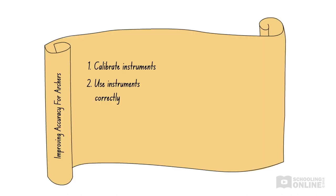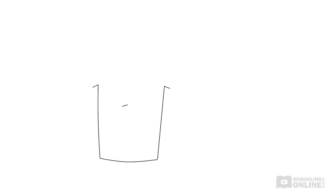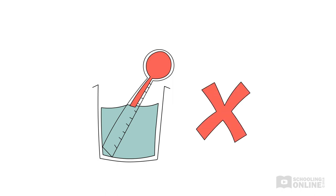Another way to reduce systematic error is to ensure that we are using and reading our instrument correctly. For example, if you are measuring the temperature of a solution, and you stick the thermometer into the beaker upside down, there's absolutely no way your result will be accurate since it's measuring the wrong thing.